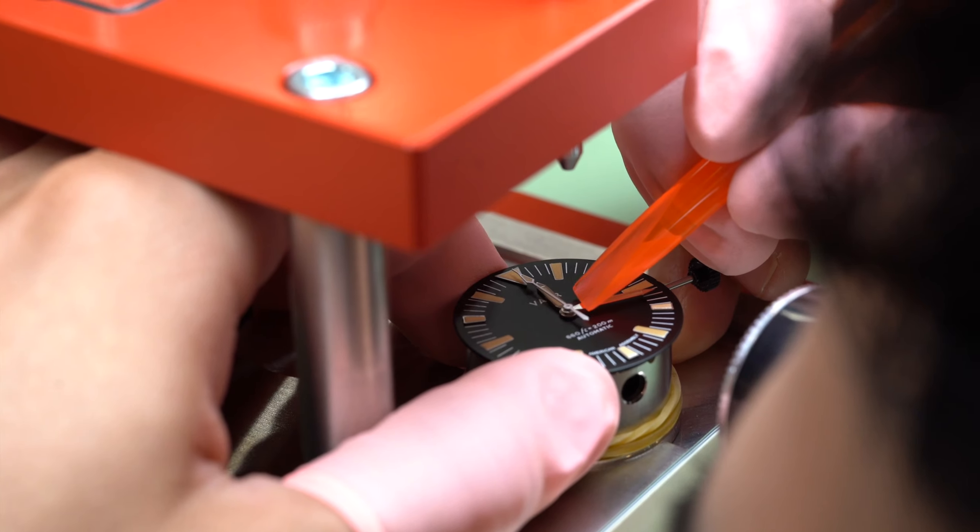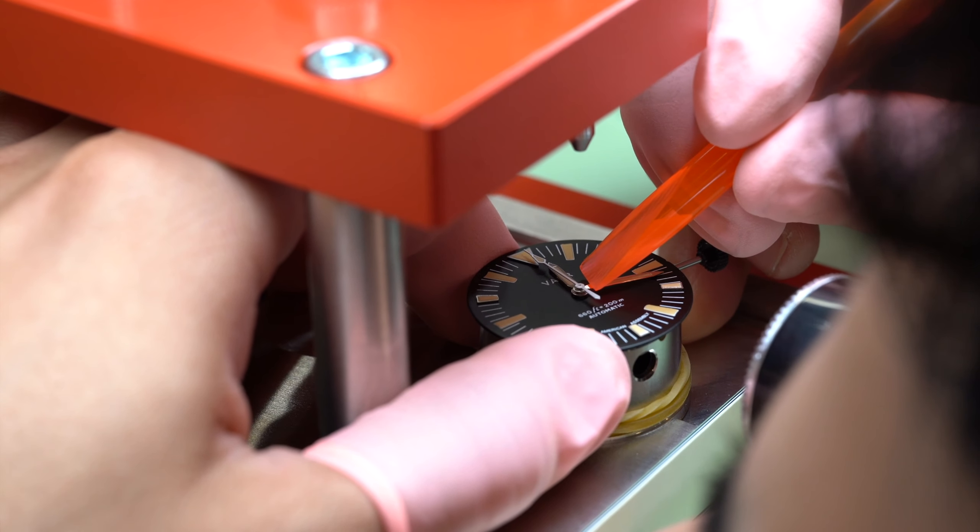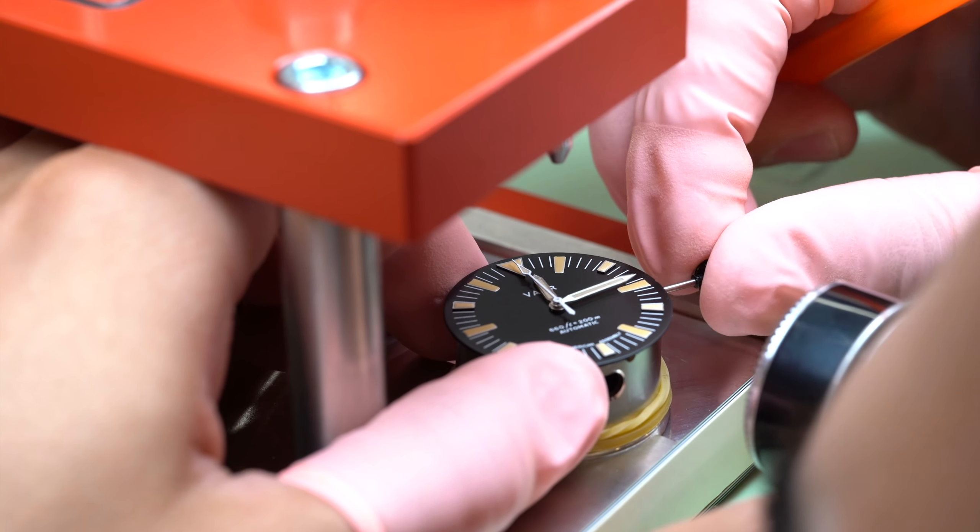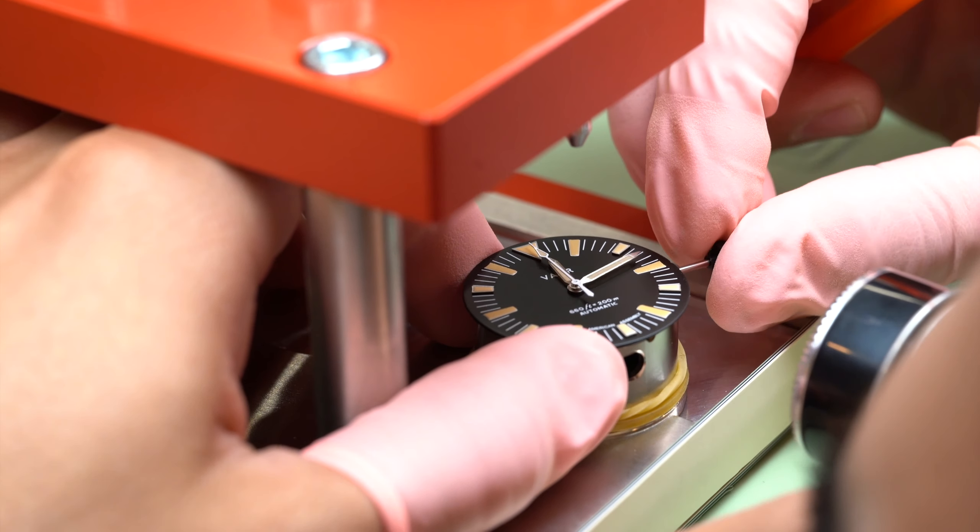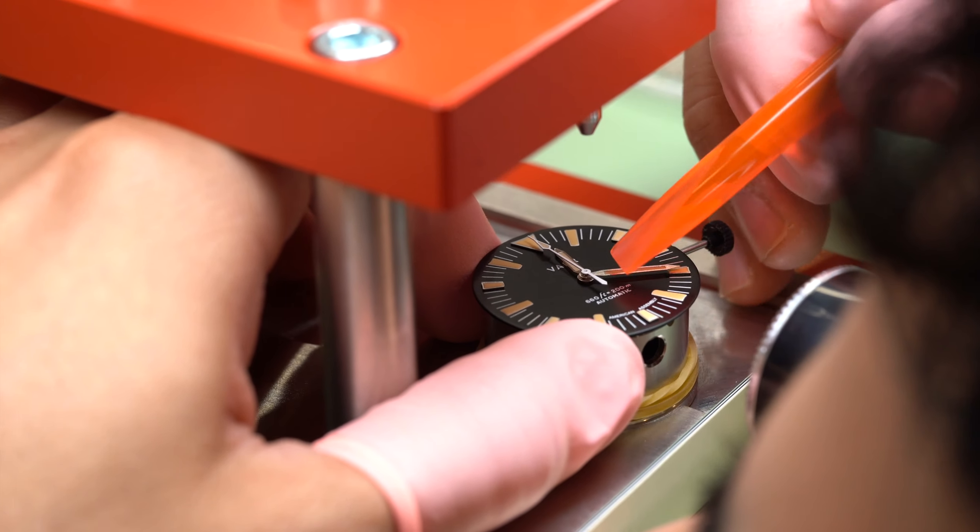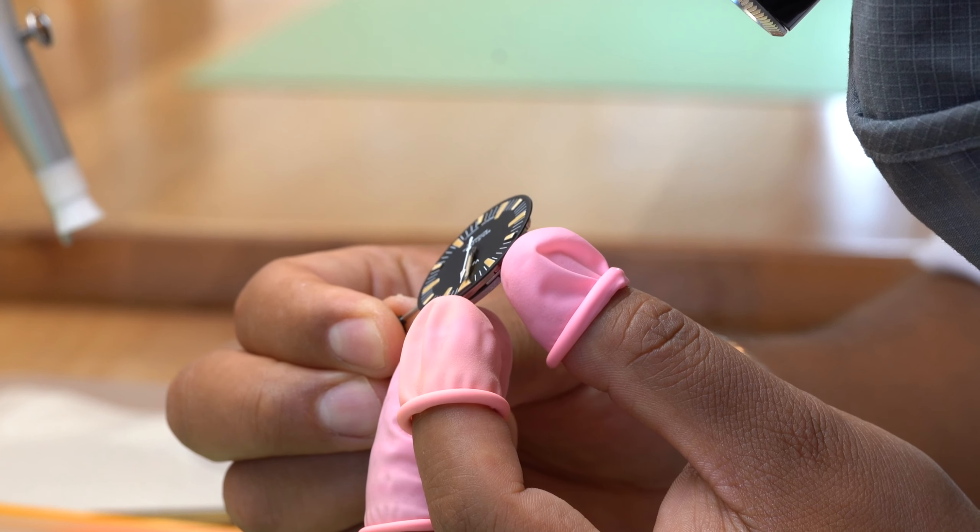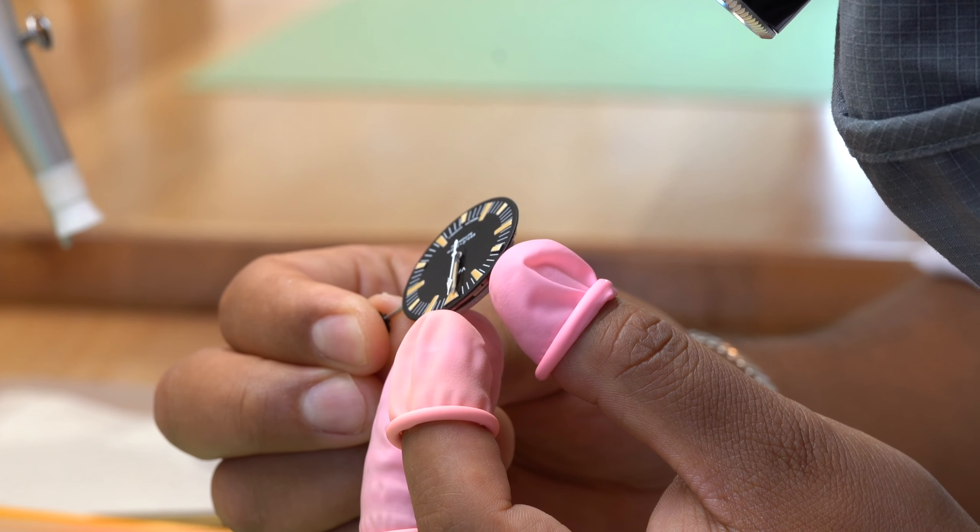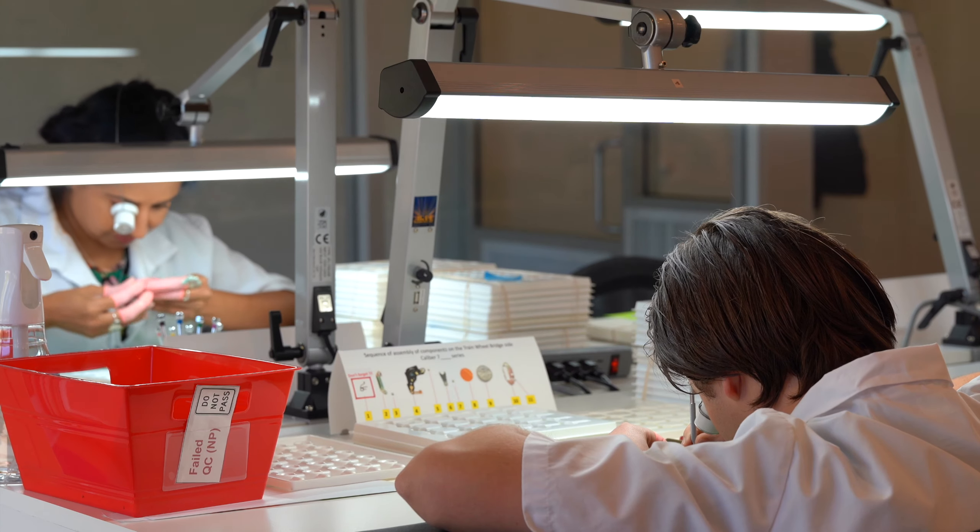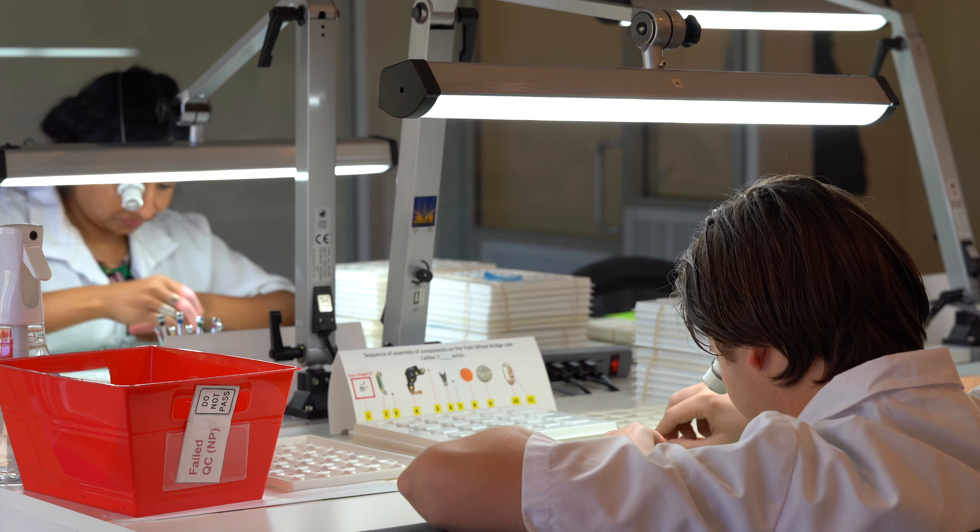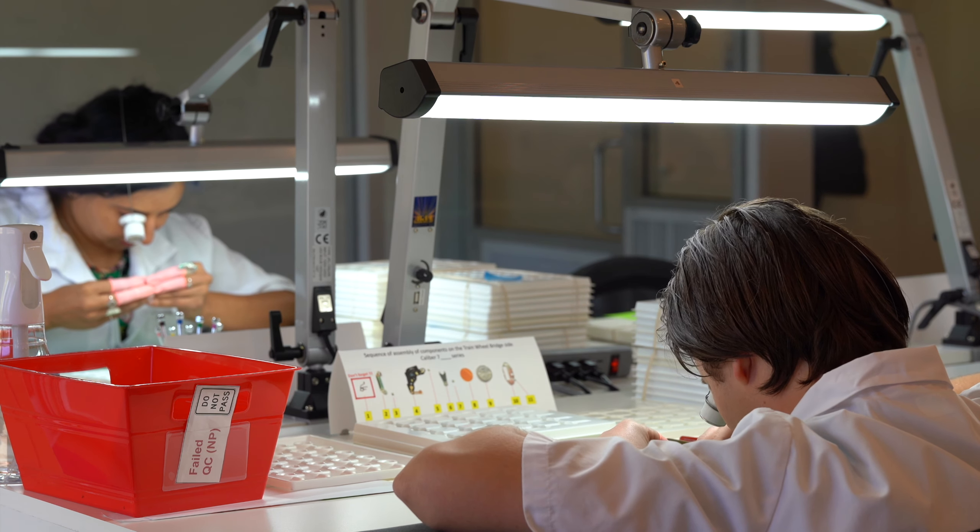The technician will also work to ensure the hands are sitting as straight as possible and are completely perpendicular with the pinion. The friction from poor hand alignment can put undue strain on the movement and ruin a watch's accuracy over time. For this reason, the added checks and inspections done at this stage are incredibly important for both the aesthetics and technical performance of the watch.